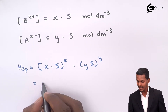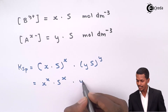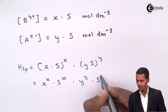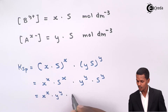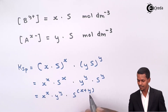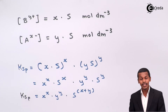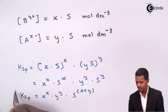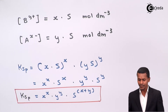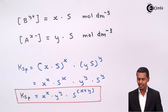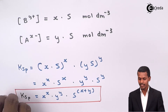Expanding this gives: x^x · s^x multiplied by y^y · s^y, which simplifies to x^x · y^y · s^(x+y). This is the relationship between the solubility product and the solubility. Now let me explain with a few examples.